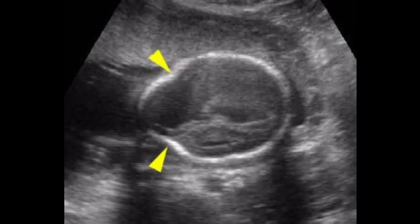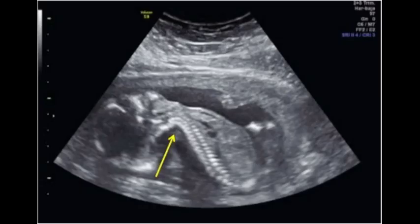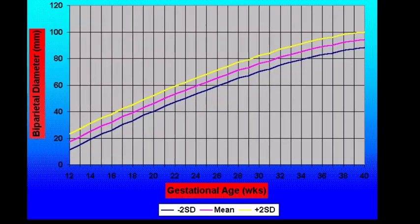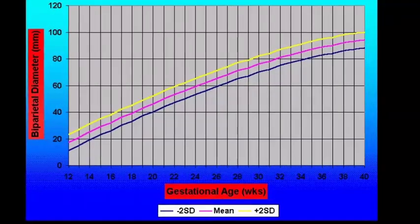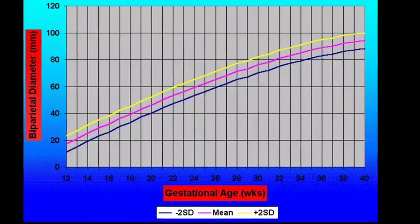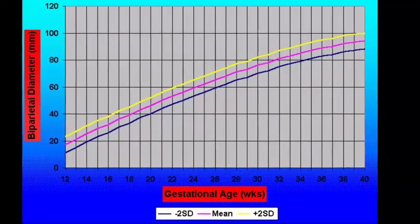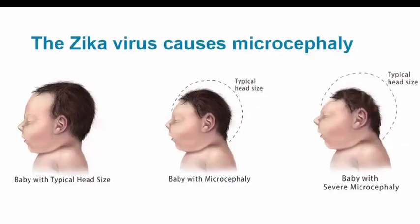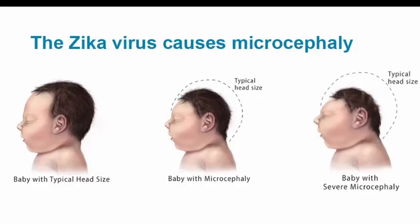Biparietal diameter may also be influenced by factors such as abnormalities of head shape, breech presentation, or multiple gestations. Head circumference may be a more reliable measurement if there is variant head shape. If the baby's biparietal diameter measurement is larger than expected, it could signal a health issue such as gestational diabetes. A low biparietal diameter can be an indication to monitor fetal head growth.